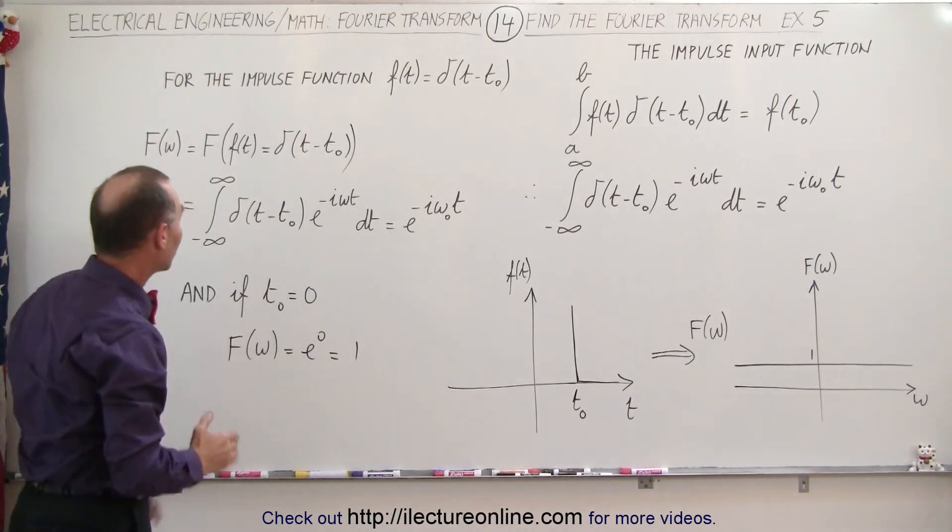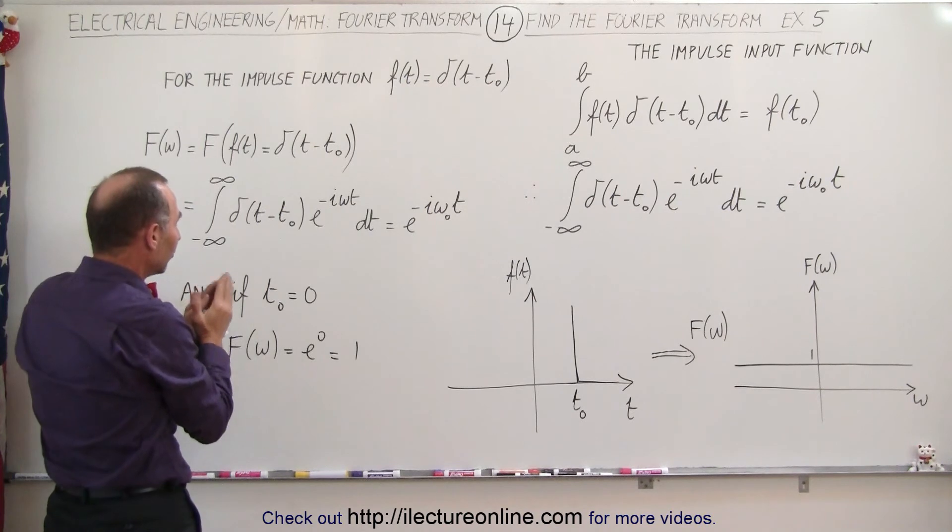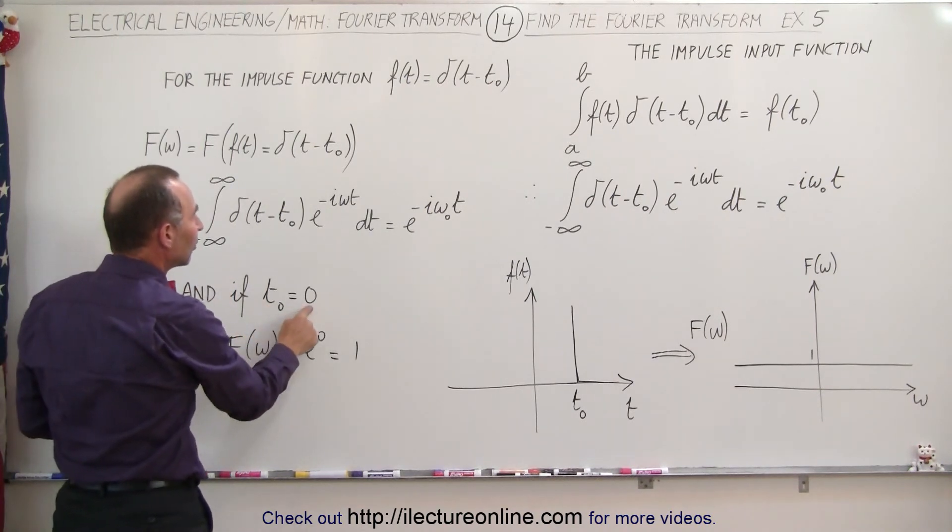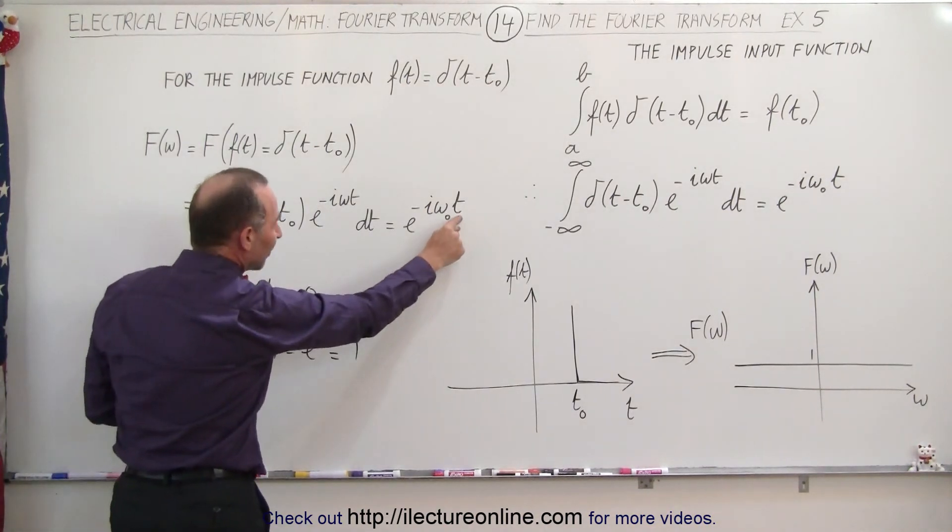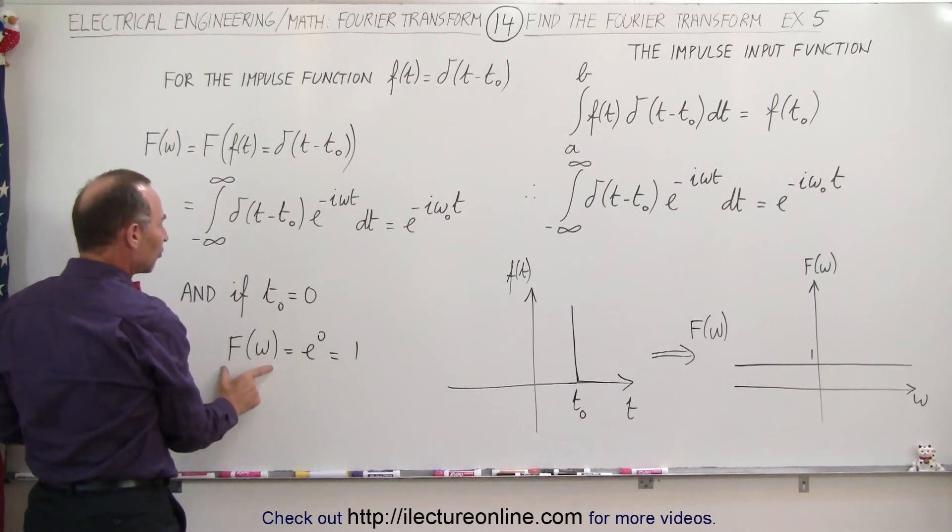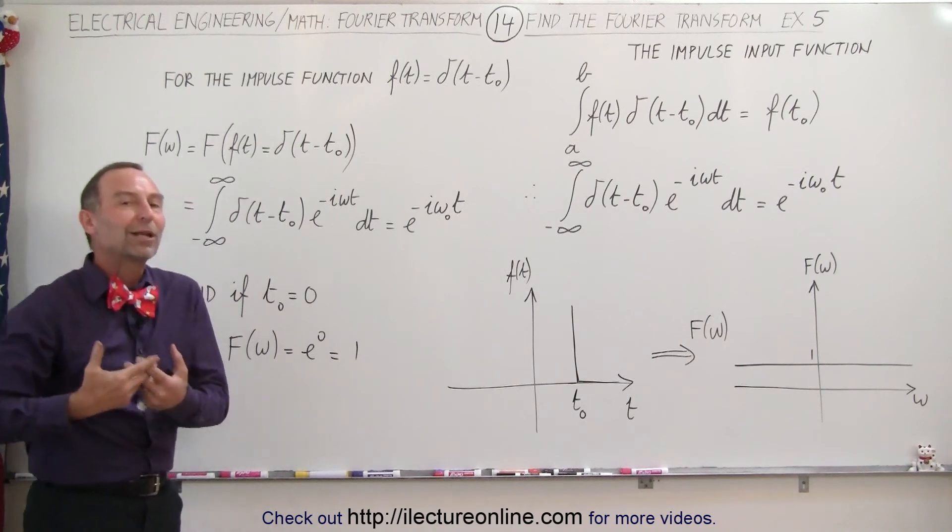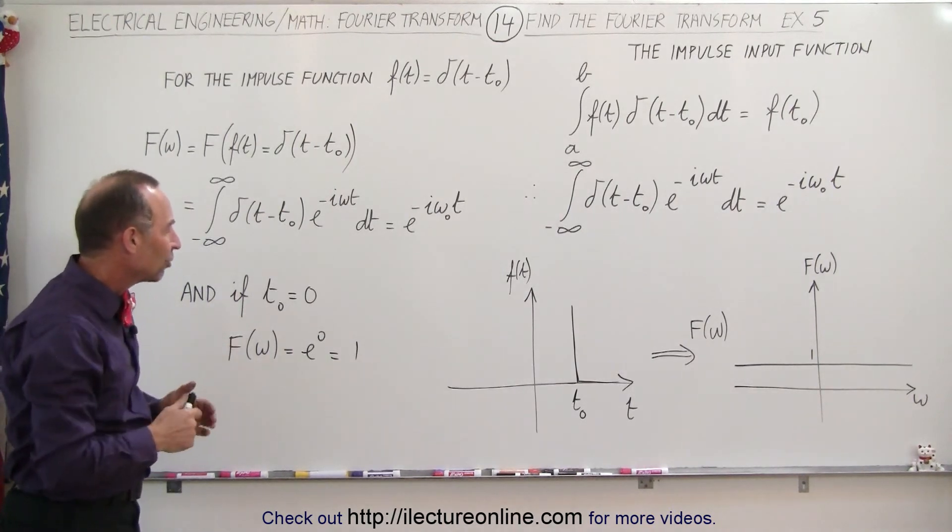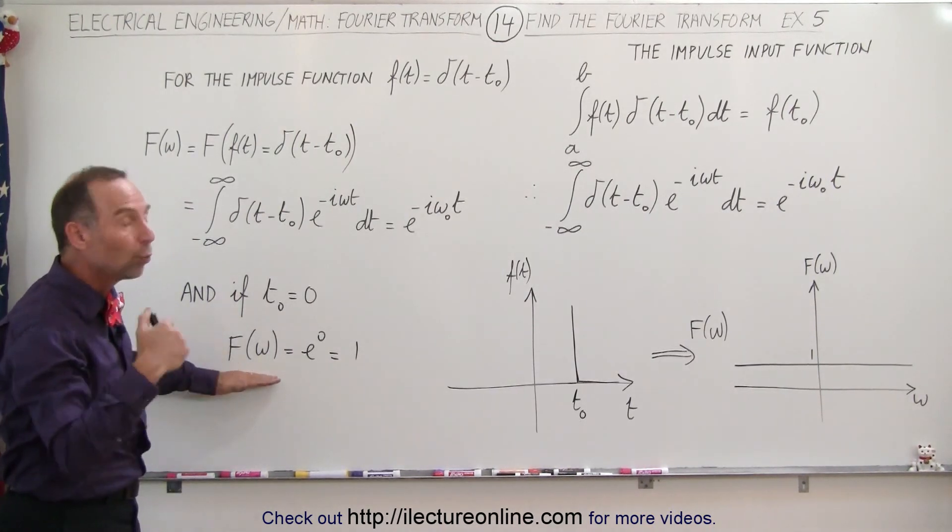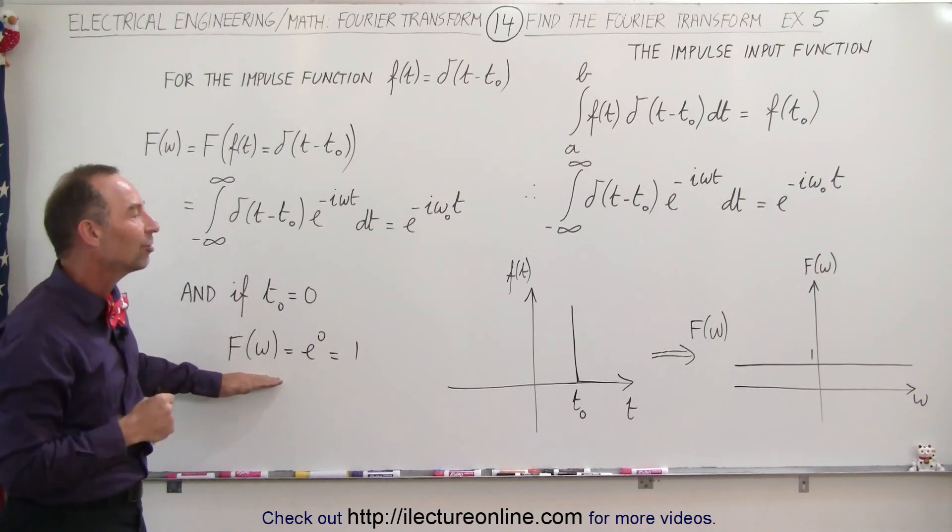And then what we can do is we can simply center our pulse where t sub-naught is equal to 0. So when we plug in a 0 for that, we get the Fourier transform is equal to e to the 0, which is equal to 1, and that's, of course, what we already knew, that the Fourier transform of a delta function equals 1, but that is why we can say so.